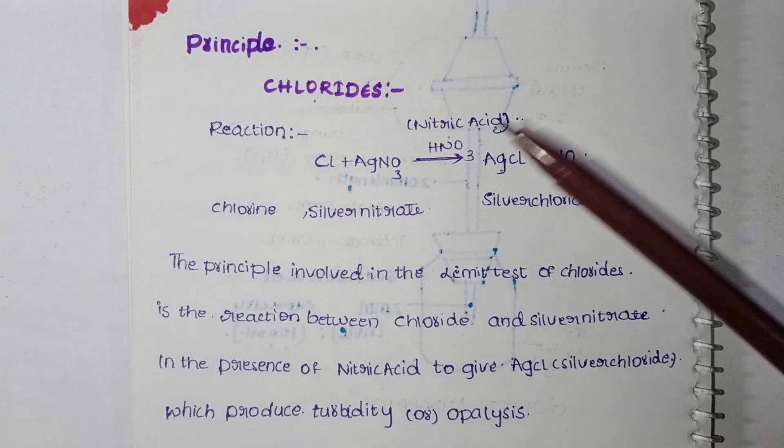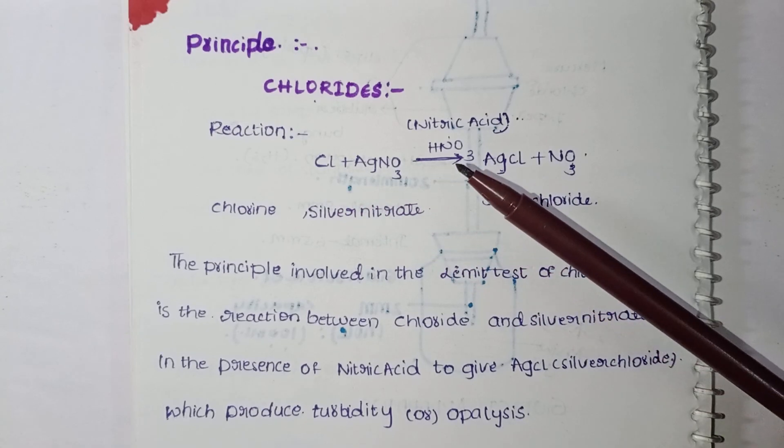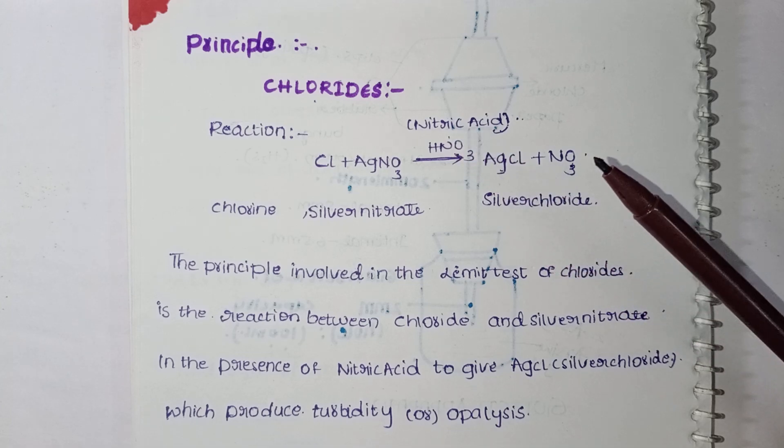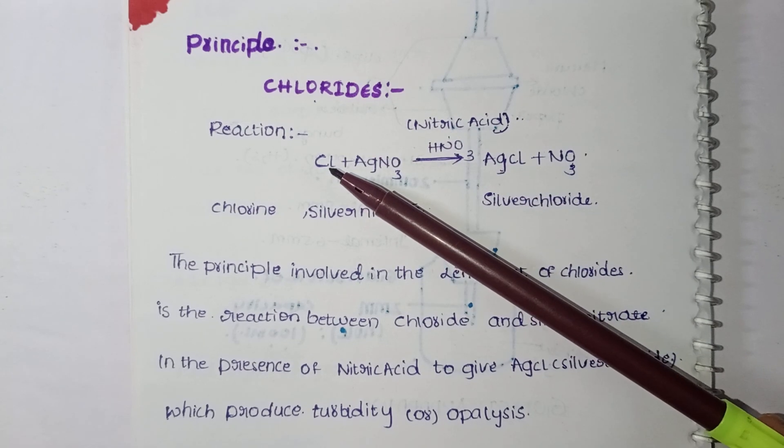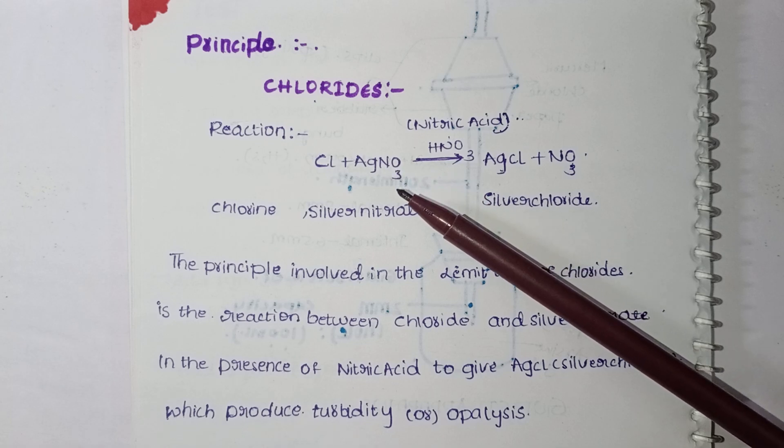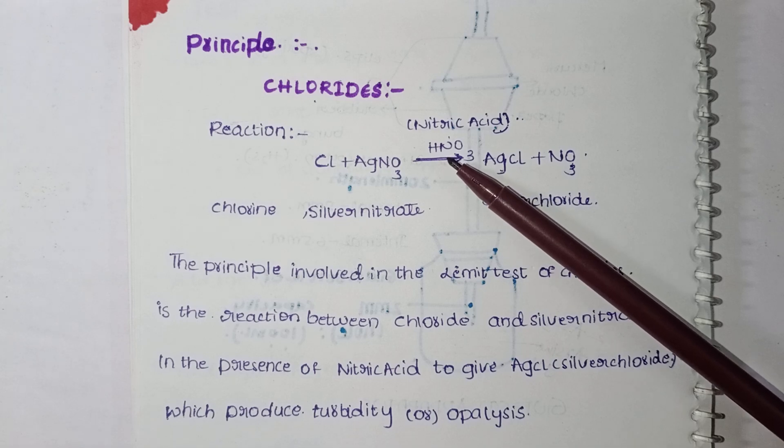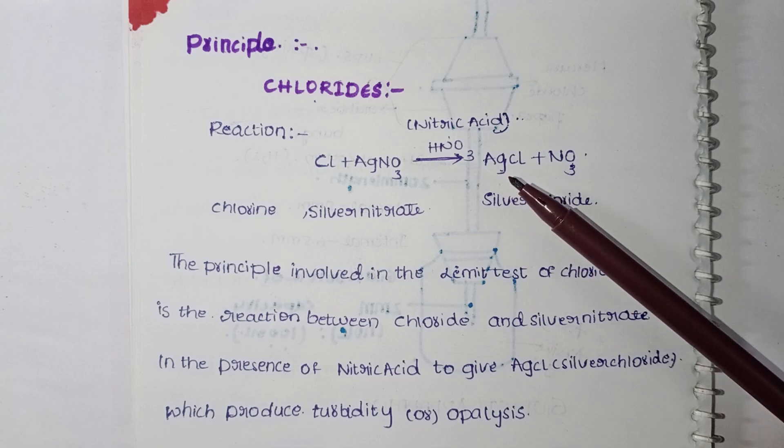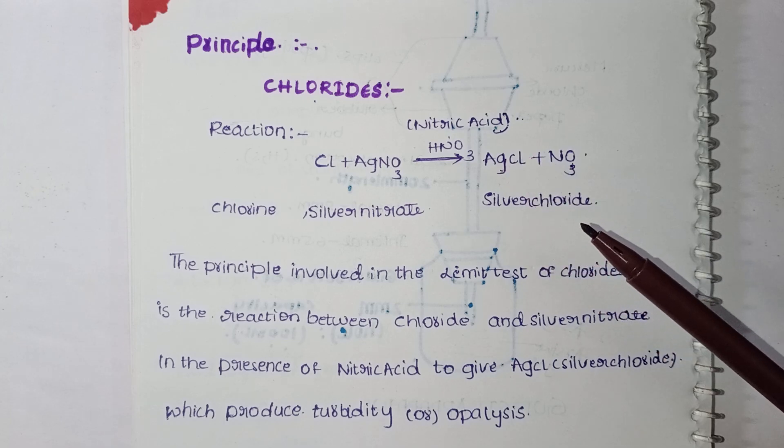So when chlorine is reacting with the silver nitrate in the presence of nitric acid, it gives rise to the silver chloride and nitrate, that is HNO3. See, chloride and Cl with AgNO3 react, and then AgCl is formed. So Ag and Cl bond together, silver chloride is formed.